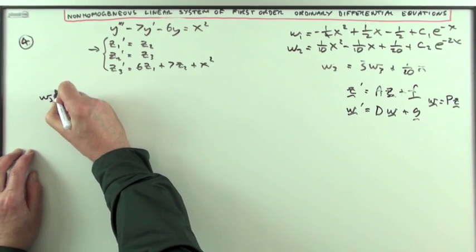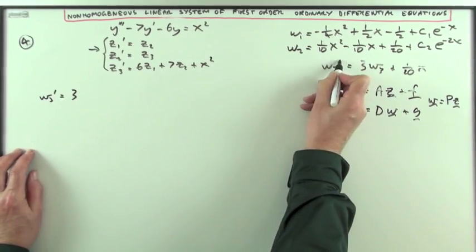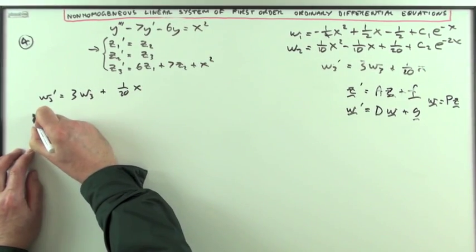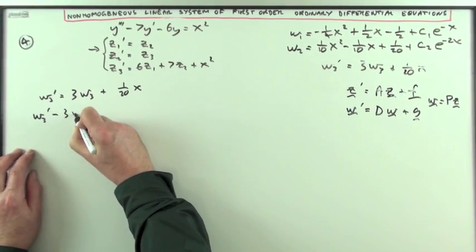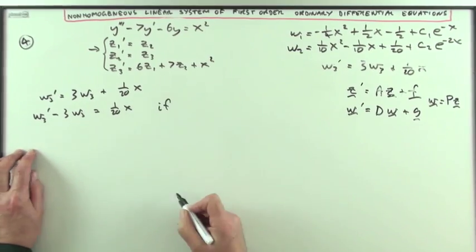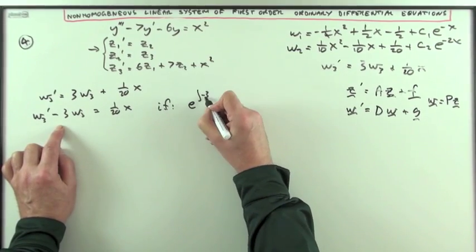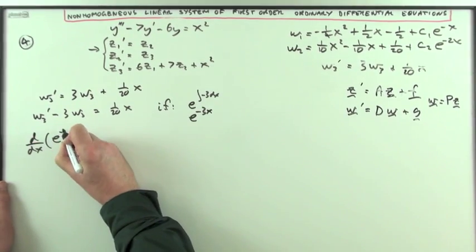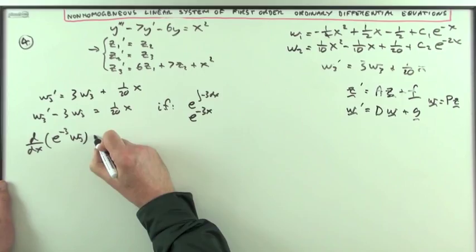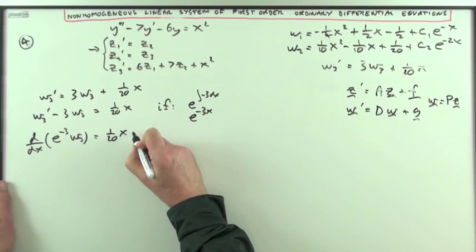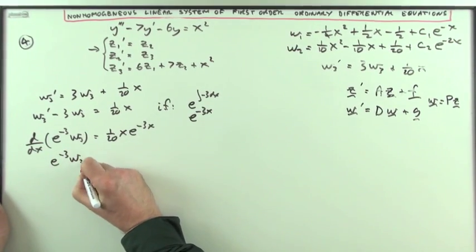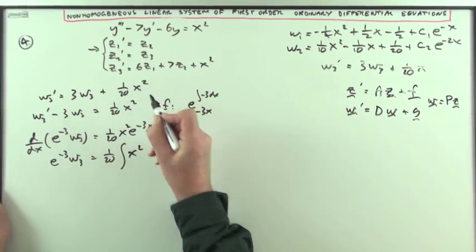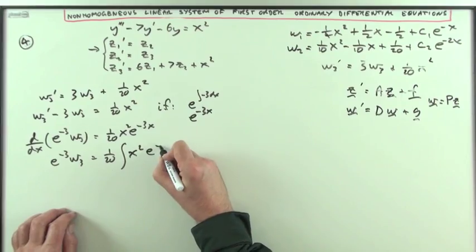And the last one w3' was 3w3 plus one twentieth of x squared. Same as before w3' minus 3w3 is one twentieth of x squared. Integrating factor of e to the integral of negative 3x. So that'd be e to the negative 3dx. That's e to the negative 3x. So it makes that an exact derivative of e to the negative 3x w3 when you multiply all the terms by e to the negative 3x. is one twentieth xe to the negative 3x. So e to the negative 3w3 will be one twentieth of the integral of, of course that was x squared. I just lost that when I was dropping that part out. e to the negative 3x dx.